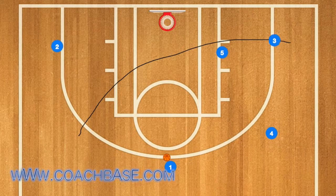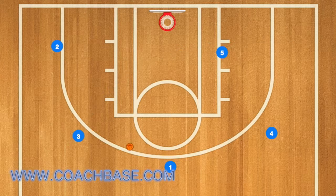In this play, player three is going to use player five as a screen, and three will pop out to the left free throw line extended area. One will then pass the ball to three, and three can either shoot the ball or fake a shot and drive to the rim.